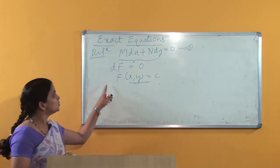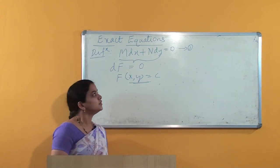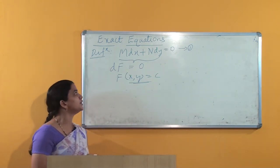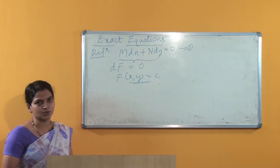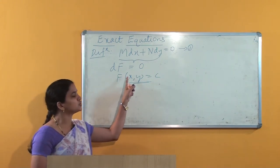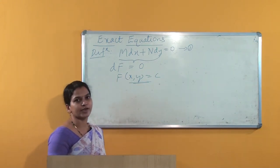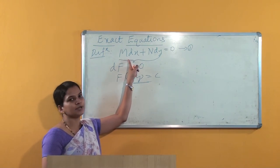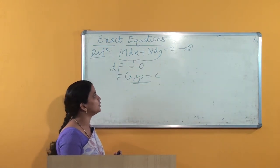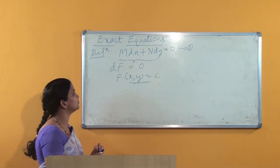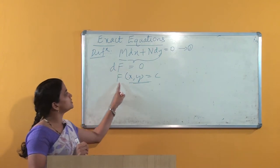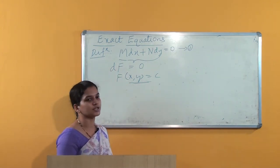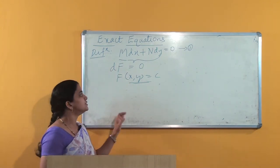So if Mdx + Ndy = 0 is an exact equation, we can find a function f(x,y) whose total derivative equals Mdx + Ndy = 0. In that case we can easily write the solution as f(x,y) = c.